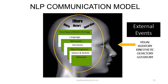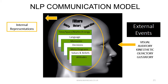So we filter our experience, then we make an internal representation of that experience. The internal representation is again coded in the five senses as pictures, sounds, feelings, and then smells and tastes. We also label our experiences or talk to ourselves about them with our self-talk, our internal dialogue, which in NLP we refer to as our auditory digital sense — our thinking and language sense.